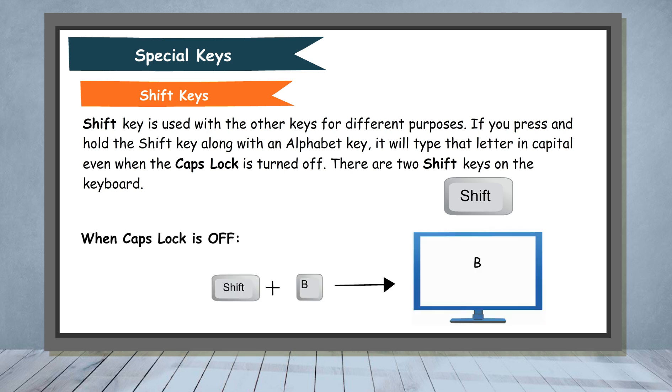When caps lock is off, shift plus B is equal to capital B. When caps lock is on, shift plus B is equal to small B.